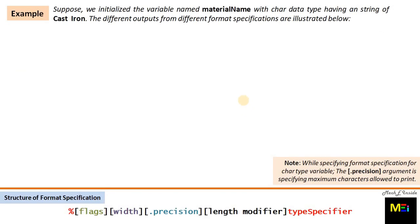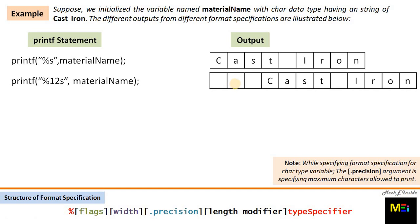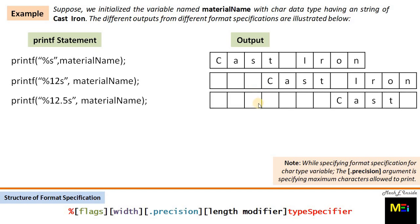Now another example: suppose we initialize the variable named material_name with character data type having a string of 'cast iron'. The different outputs from different format specifications are illustrated below. First, the default output is shown while ignoring optional arguments. Secondly, when we give the width argument the output changes accordingly. Thirdly, when we put the precision argument along with the width argument — recall that for strings, precision specifies the maximum characters allowed to print — if we mention precision with 5, it only prints the first 5 characters: 'cast' and then a space.